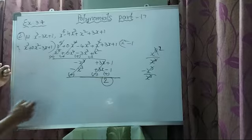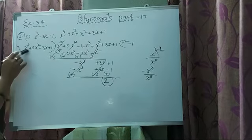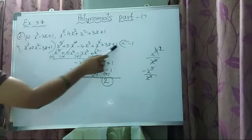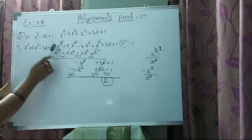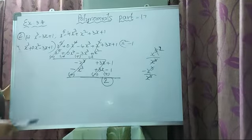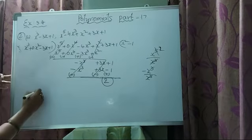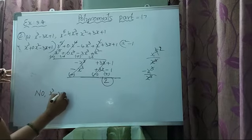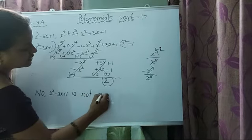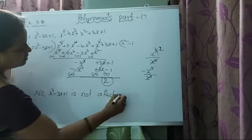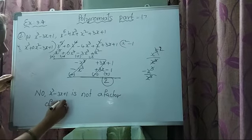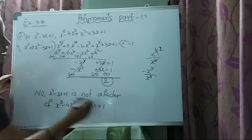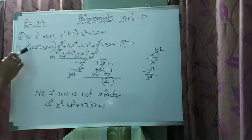After cancellations, the remainder is 2. If we get 2 as a remainder, it is not a factor of this polynomial. If you get 0 as the remainder, then we can say it is a factor. So x square minus 1 is a factor, but x cube minus 3x plus 1 is not a factor of x power 5 minus 4x cube plus x square plus 3x plus 1.